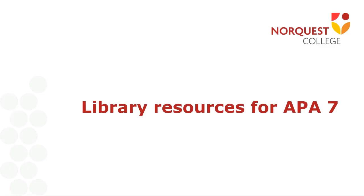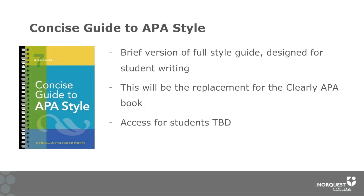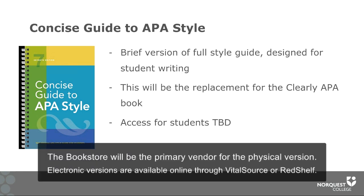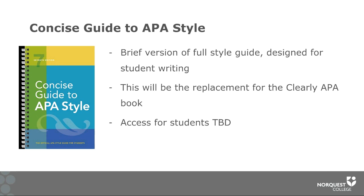Let's turn now to look at some library resources for APA version 7. The print guide we recommend for student use is the Concise Guide to APA Style. This is a brief version of the full APA guide designed specifically for student writing for assignments and PowerPoints, and will be the replacement for the Clearly APA book used for APA 6. As of the day of recording, student access for this book is still being determined. Please get in touch with the bookstore if you're looking to purchase a copy.